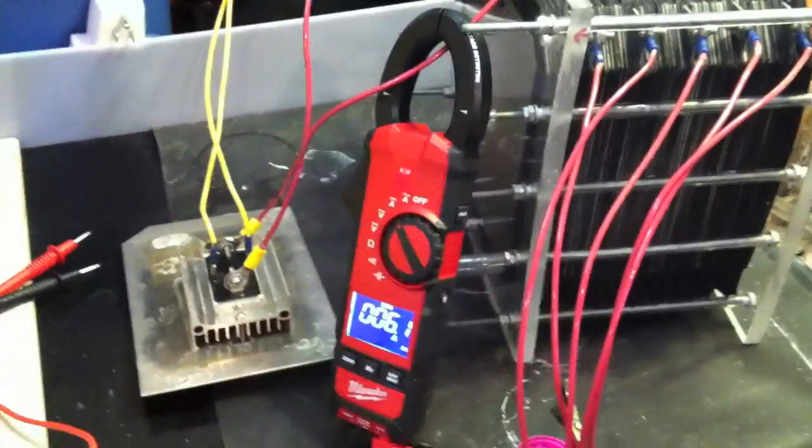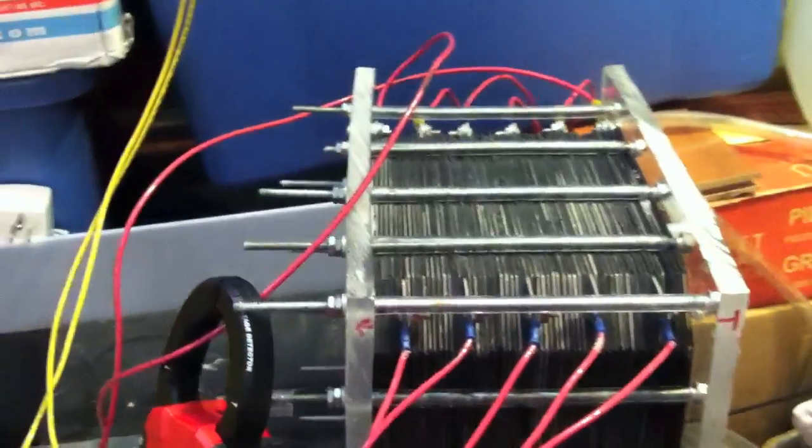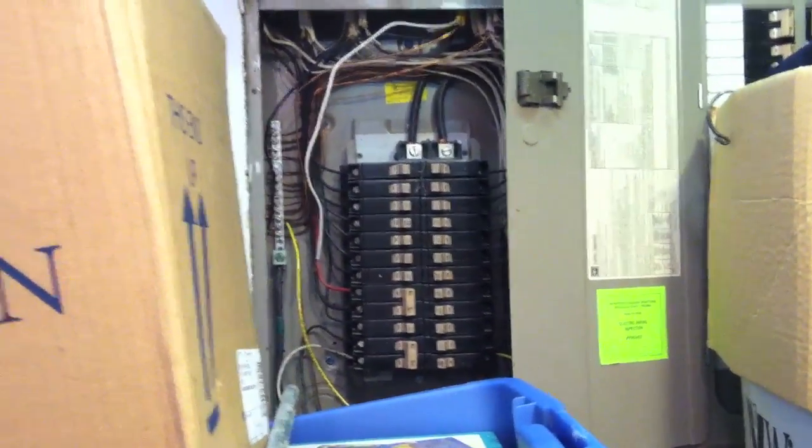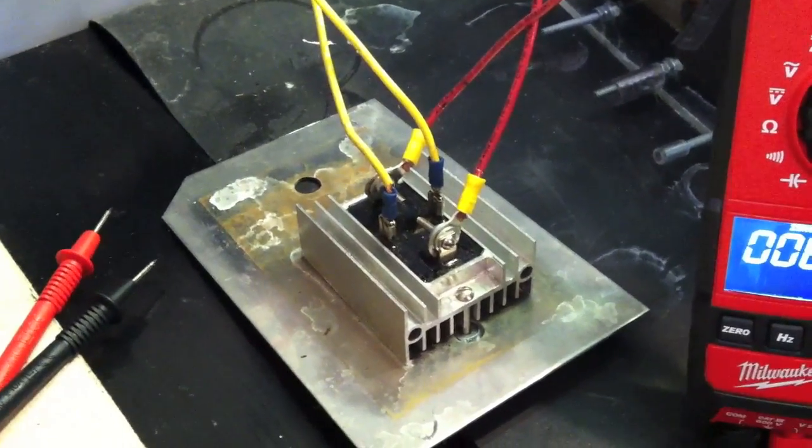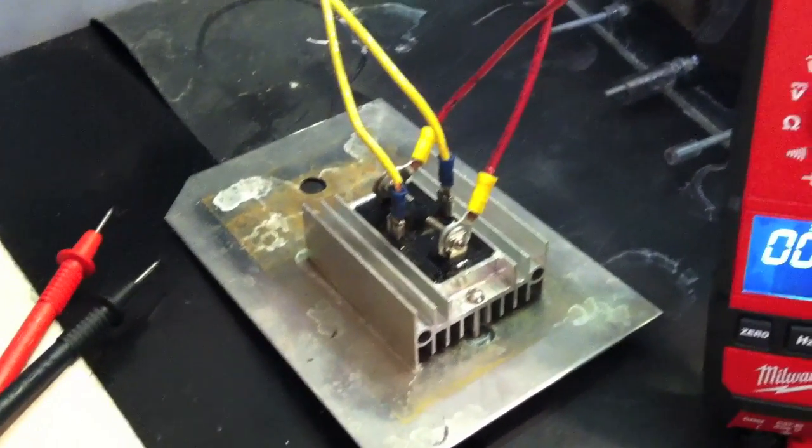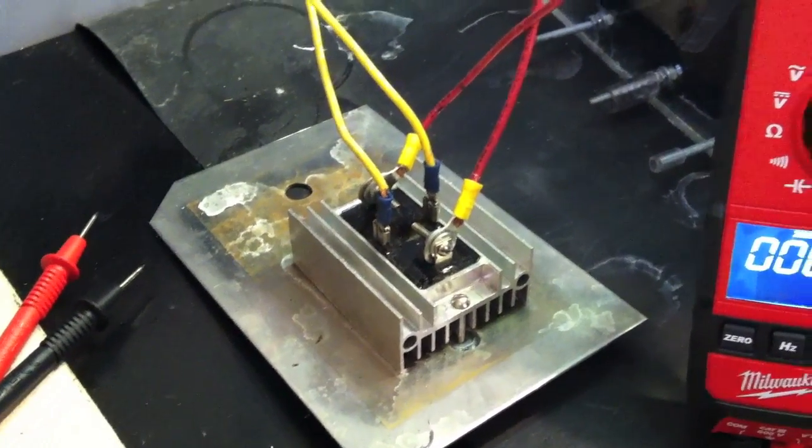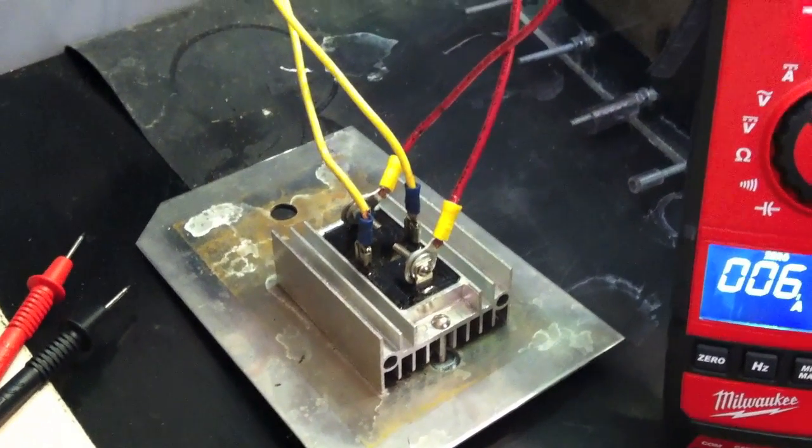So the way it is working on 120 volts right now is it is going from the panel box through the wire into this bridge rectifier. This is a 90 amp bridge rectifier. It takes the AC current and converts it into DC current which is what it needs to be in order for electrolysis to occur.